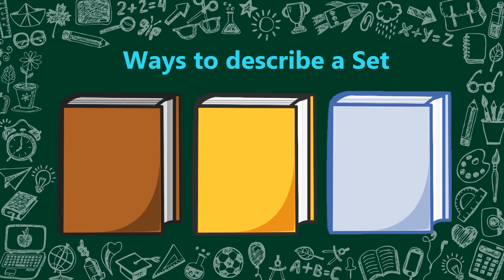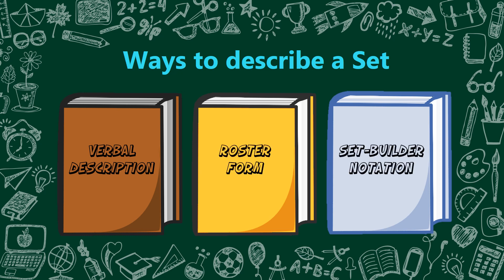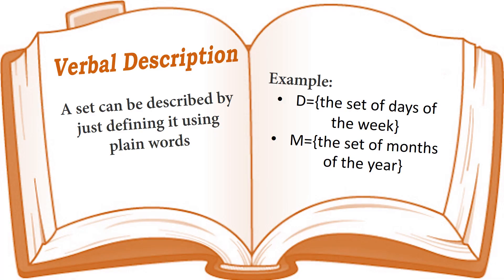Now, let us discuss the ways to describe a set. We have 3 ways to describe a set. First is the verbal description. Second, the roster form. And last is the set builder notation form. Let us first discuss the verbal description — a set can be described by just defining it using plain words. Example: Set D is the set of days of the week. We also have: M is equal to the set of months of the year. So, verbal description means we are just describing it using plain words.